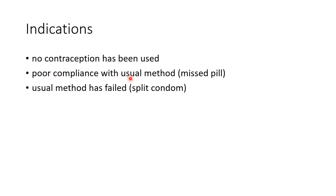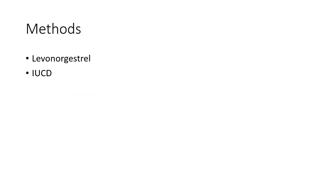Emergency contraception is also indicated when there is poor compliance with the usual contraceptive method — for example, a missed oral contraceptive pill — or when the usual contraceptive method has failed, for example a split condom.